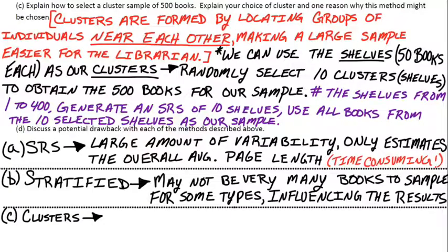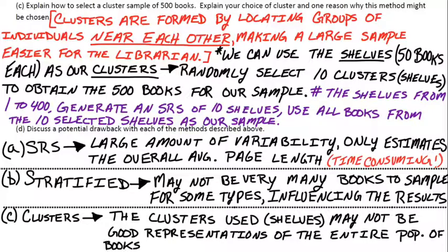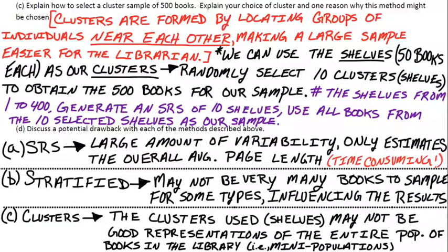For cluster sampling, the clusters — those shelves — may not represent the whole population well, especially considering how shelves are organized by type. You could find a shelf of really thick books or really short books depending on type, so the selected shelves may not be good mini-populations. Although cluster sampling is the quickest and most efficient method, it may not be the best depending on which shelves are selected and the types of books on those shelves.